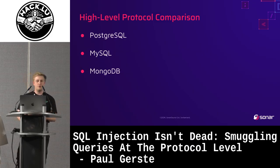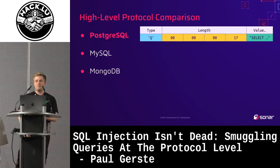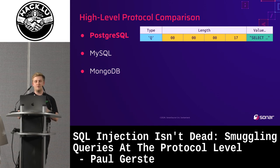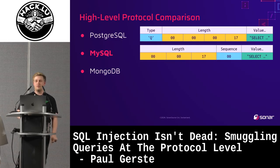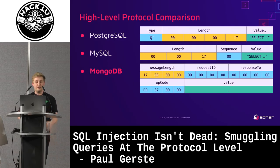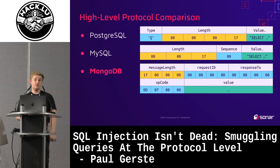Here's a small comparison between the protocols of three popular databases. For Postgres, a typical message has one byte of type, then a four-byte length field, then a value. In MySQL it's similar: a three-byte length field, a sequence field, and a value with message type info. For MongoDB, there's a slightly larger header with a four-byte length and a four-byte opcode, followed by a more complex BSON structure.